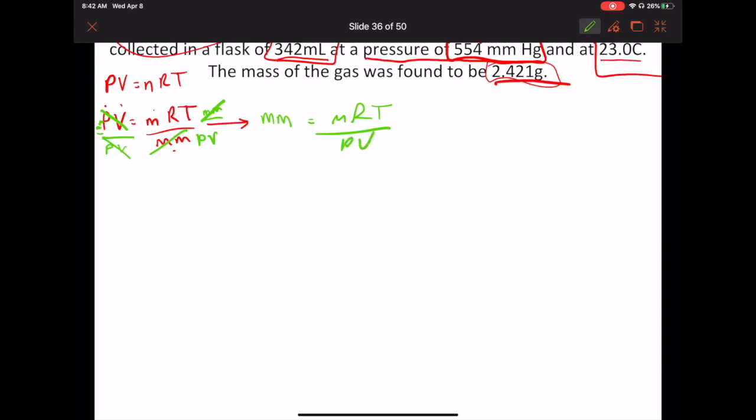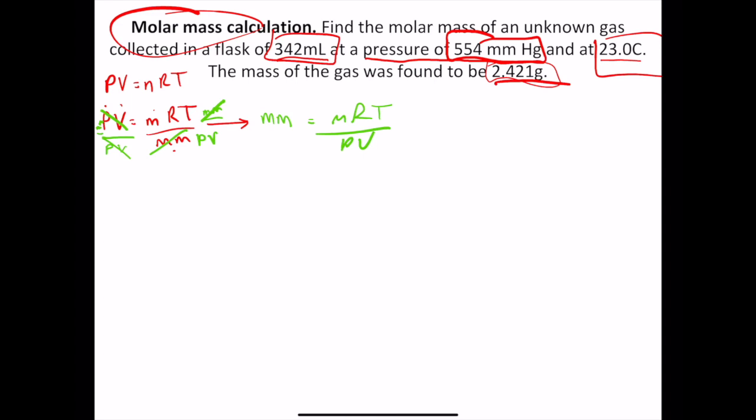Okay. So now we have this equation that we can plug in some numbers. Now before we can just plug in some numbers, unfortunately we have to do some conversions. Because we're using R here. And R is ATM liters over moles times Kelvin. So for example, we don't have this in liters. Nothing's right, right? We have to convert everything. So let's start doing that.